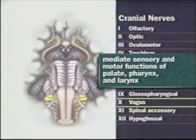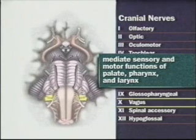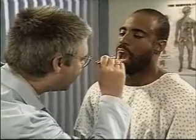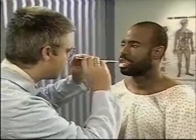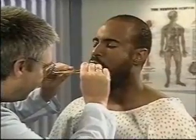Cranial nerves nine and ten, the glossopharyngeal and vagus nerves, mediate the sensory and motor functions of the palate, pharynx, and larynx. Ask the patient to say 'ah' or yawn as you observe the soft palate and uvula — the soft palate should rise promptly and symmetrically and the uvula should remain midline. Next, test the gag reflex one side at a time: using a tongue blade, touch one side of the pharynx, then the other, and observe for a prompt rise of the palate and other signs of gagging. Finally, ask the patient to swallow, which should be done without difficulty or regurgitation.